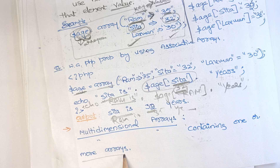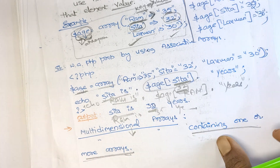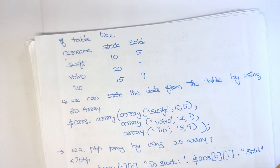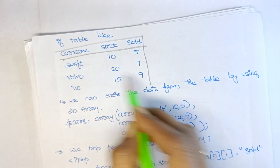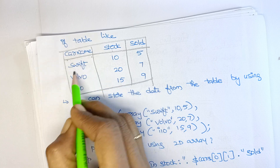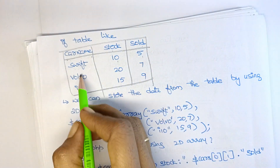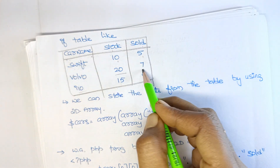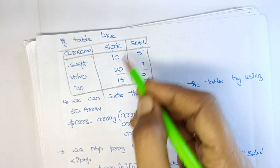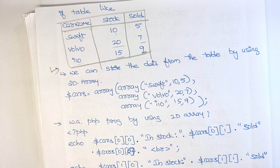Next, we will cover multidimensional arrays. Multidimensional arrays contain one or more arrays. For example, consider a table with columns: car name, stock, and sold. Car names are Swift, Volvo, and I10. Swift has stock 10, sold 5; Volvo has stock 10, sold 5 — and so on. I want to maintain this table information using a multidimensional array.